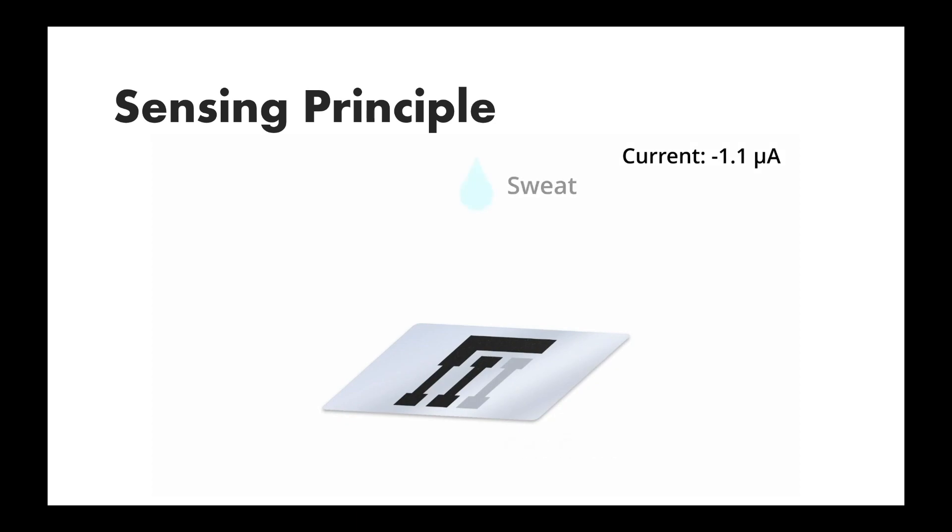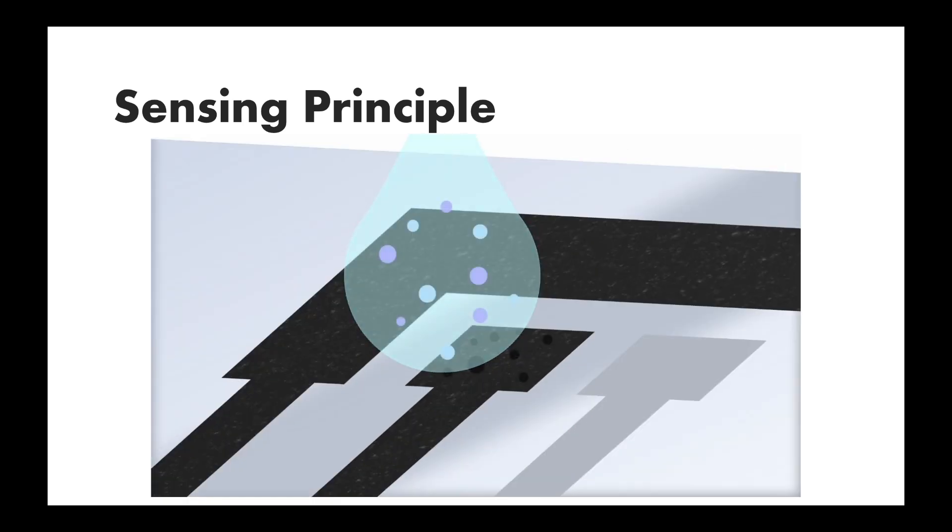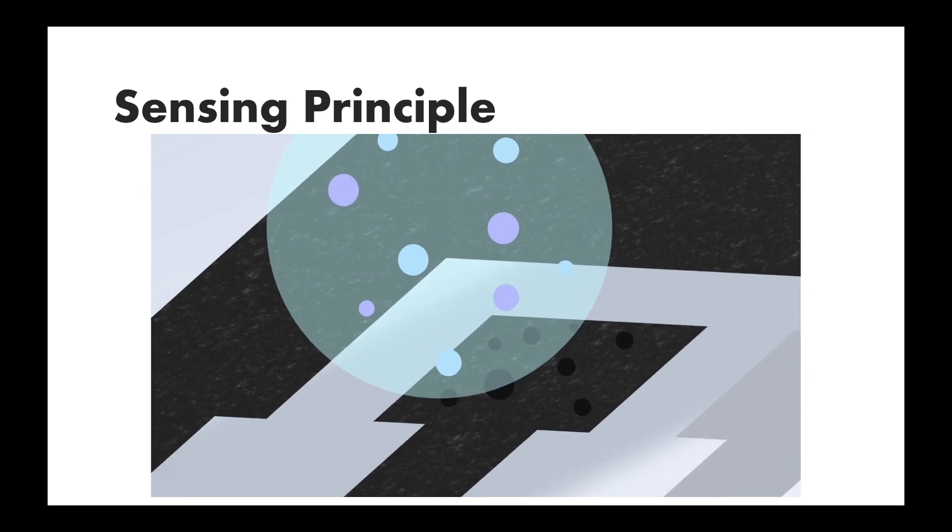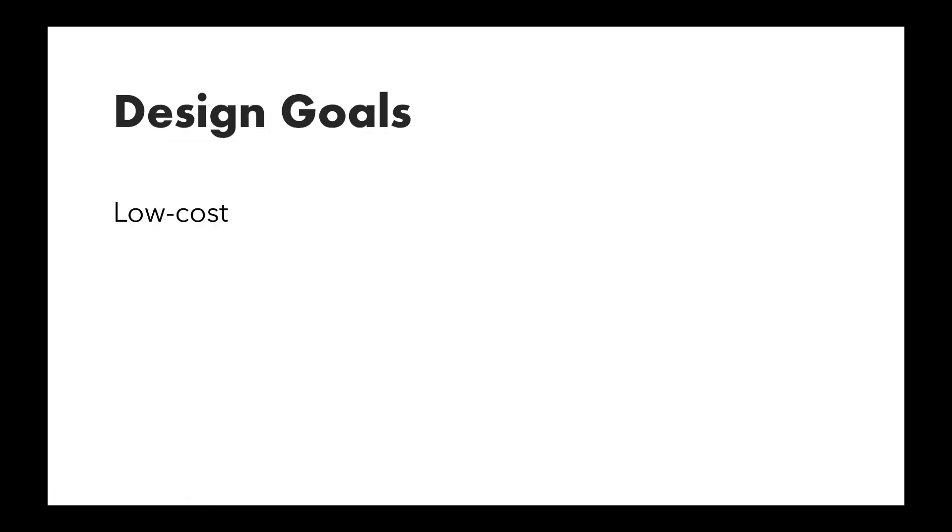When an analyte molecule or a biomarker in our case lands on the surface of a working electrode, it reacts with the electrode material which results in the electron transfer between the two. This is often referred to as a redox reaction. The prime purpose of this working electrode is to convey this chemical reaction into a current signal by capturing the released electrons.